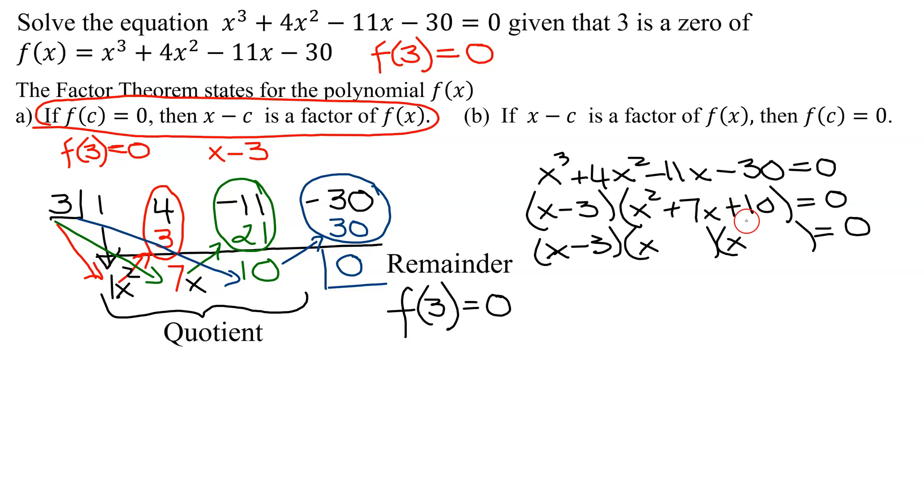My two numbers multiply to a positive, so the signs are the same. They add to a positive, so that same sign is positive. So I need two numbers that multiply to positive 10 and add to positive 7. I think my two numbers are 2 and 5. If you want to check it, you foil this out and you'll get this expression.